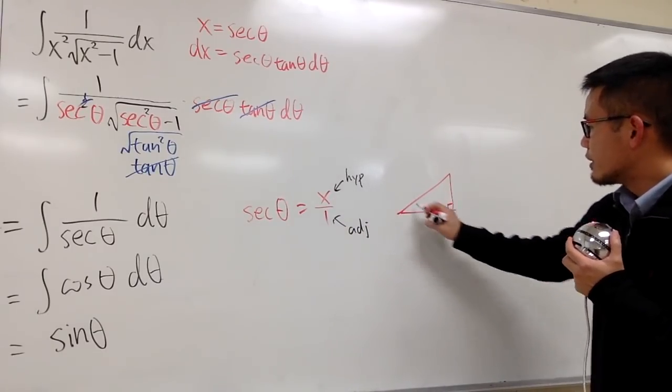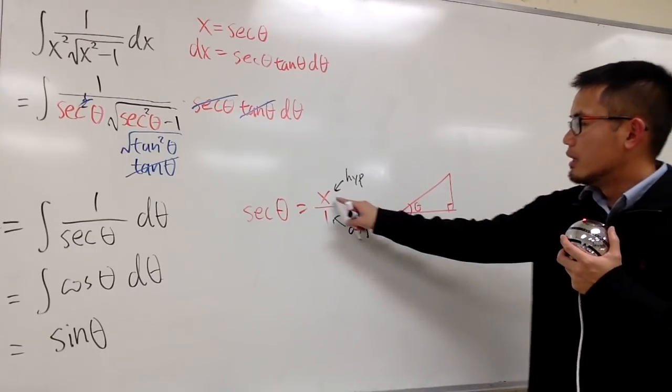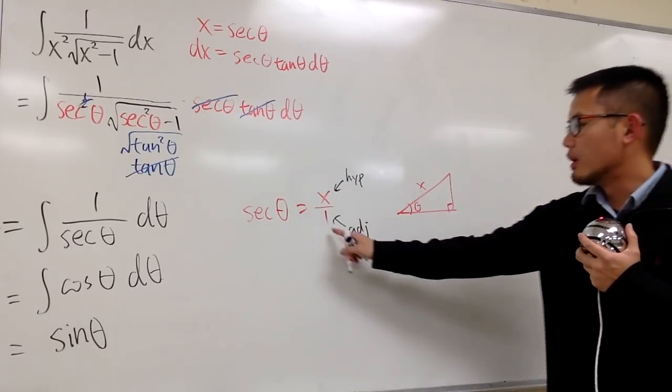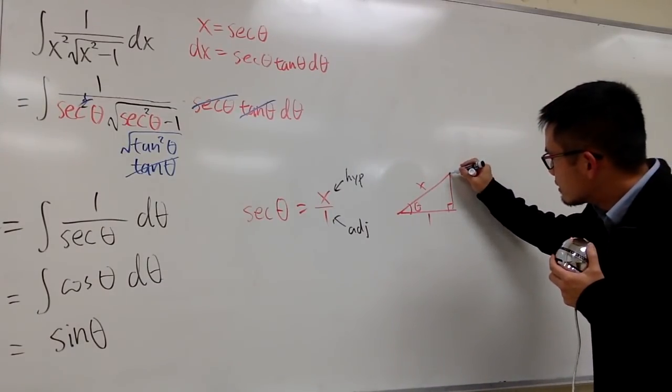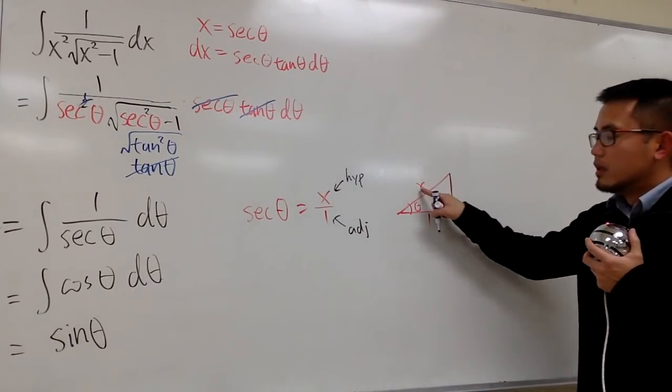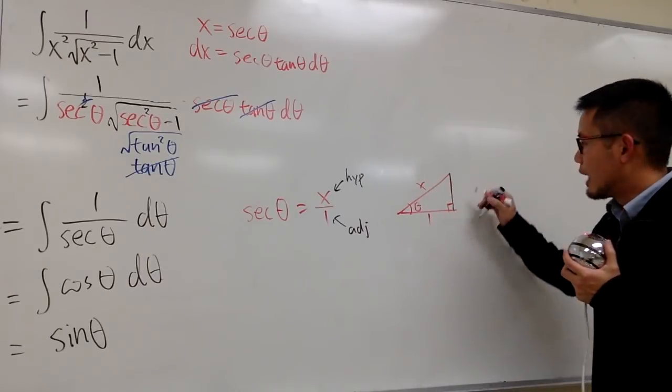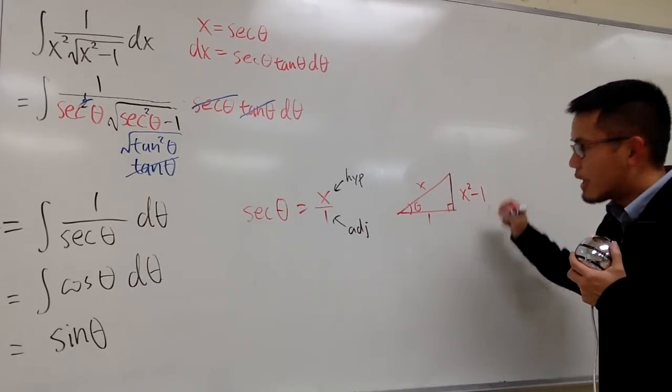So I'm going to draw a right triangle like this, and put a right angle here, and a theta here. The x will be hypotenuse, and then the adjacent will be 1. And this side is going to be x squared, and then minus 1 squared, which we have x squared minus 1.